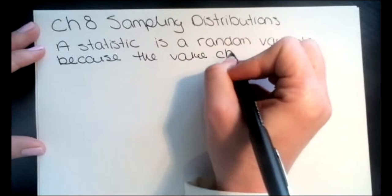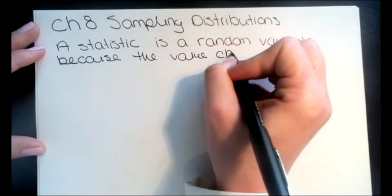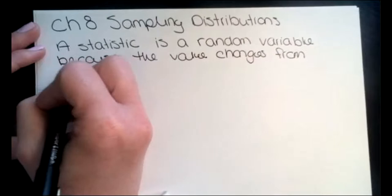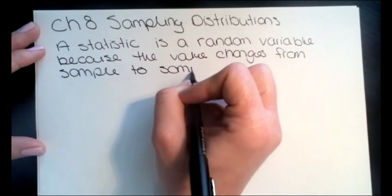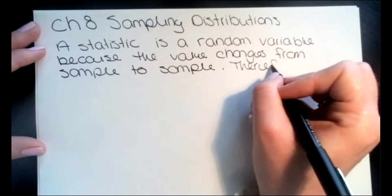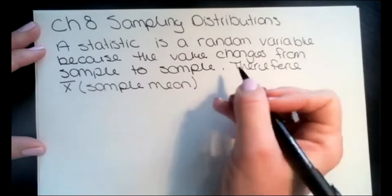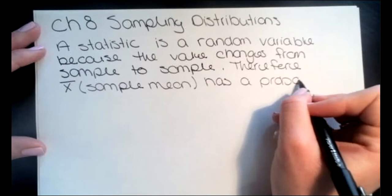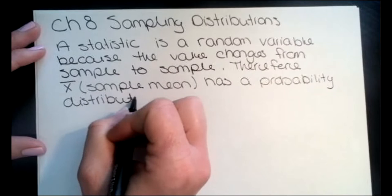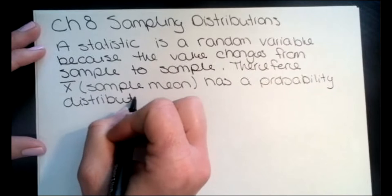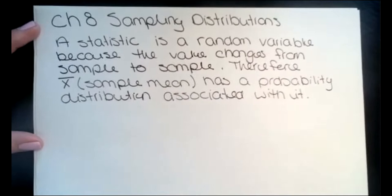A statistic is a random variable because the value changes from sample to sample. Therefore, x-bar, our sample mean, has a probability distribution associated with it.